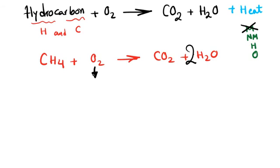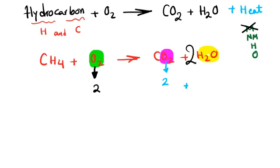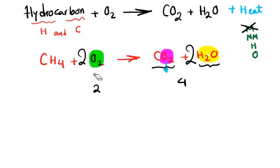Now balance oxygen. On the left we have two oxygen atoms. On the right: CO2 has two oxygen atoms, and H2O has one oxygen — but with a coefficient of two, that gives two oxygen atoms from H2O. So on the right we have two plus two equals four oxygen atoms total. We multiply O2 by two to get four on the left.